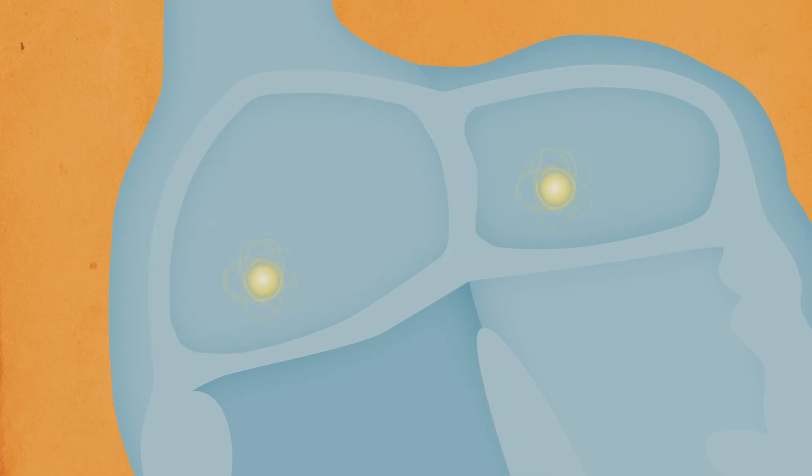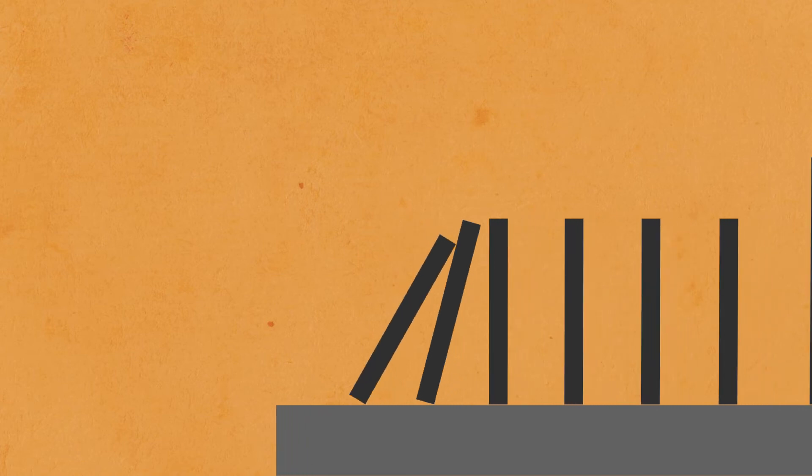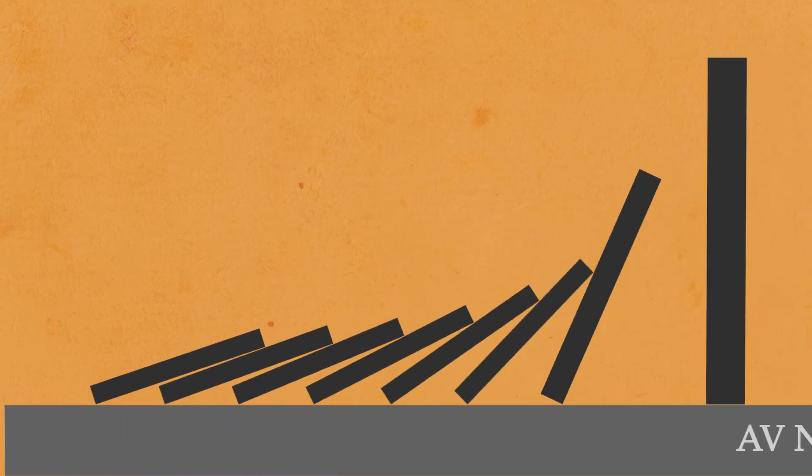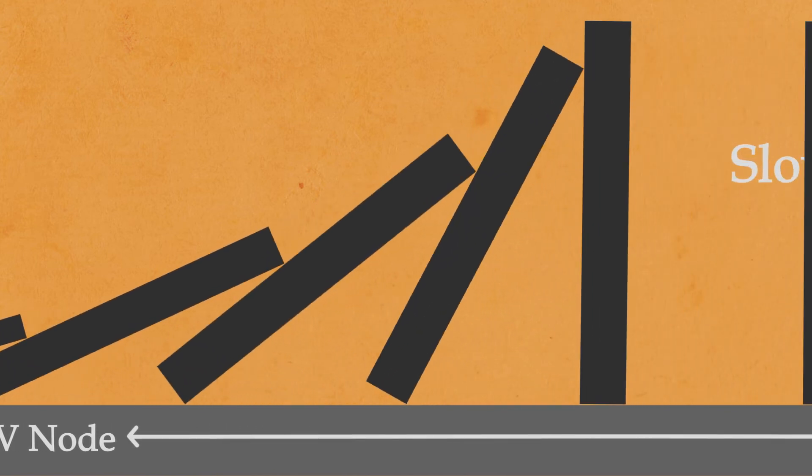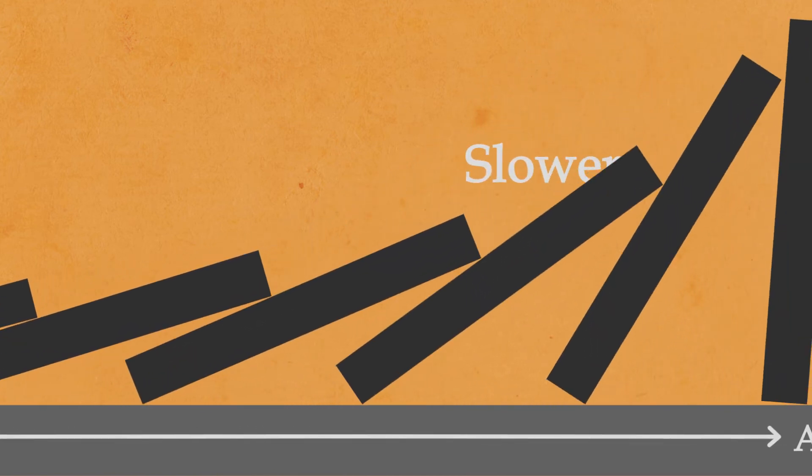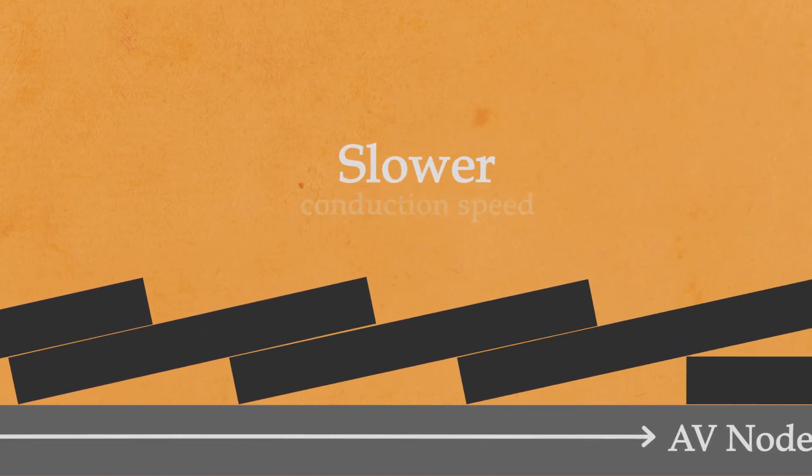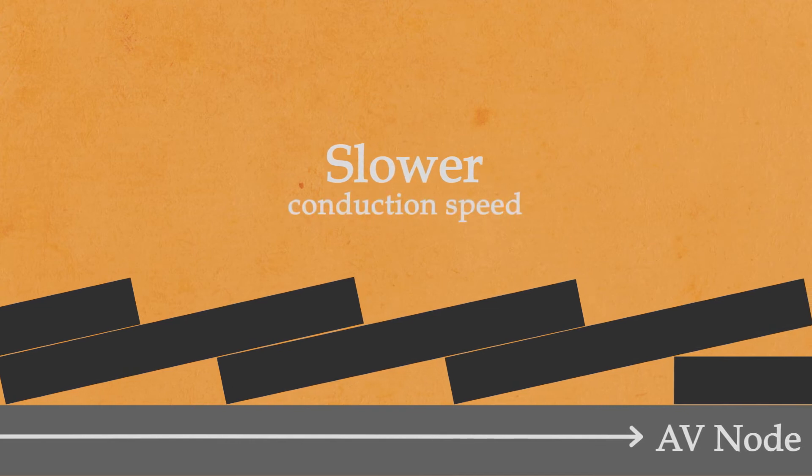Wait, the action potential slows down in the AV node. I bet you can't explain that with dominoes. Actually, we can. At this convergence, the dominoes are larger, with more space between them. This means that the rate of dominoes falling becomes slower, just like how we see the conduction speed decrease at the AV node.